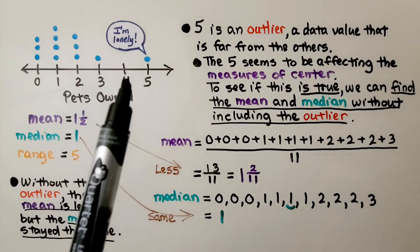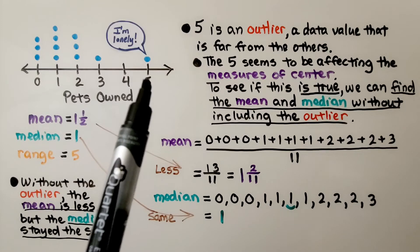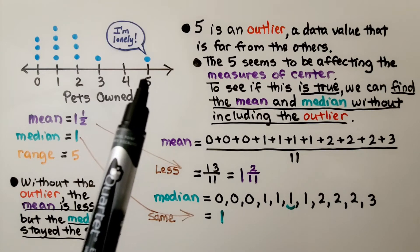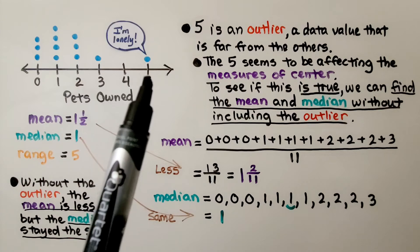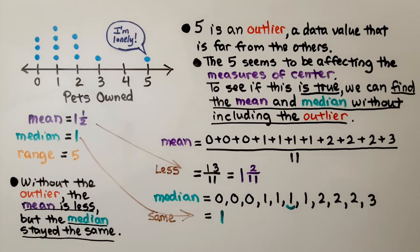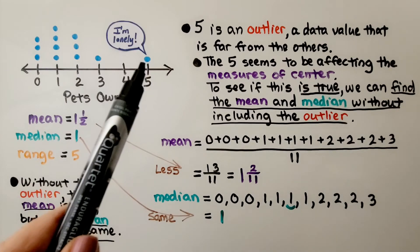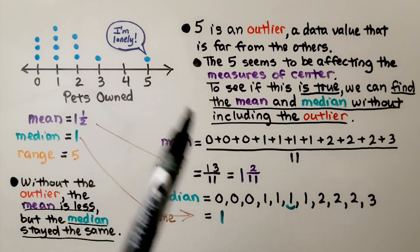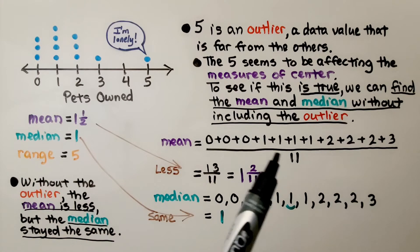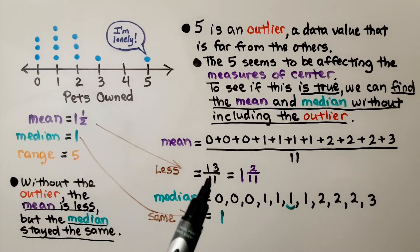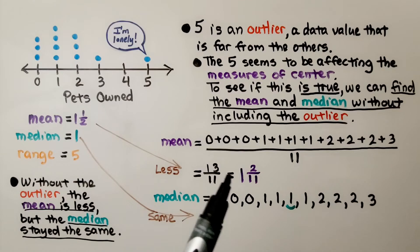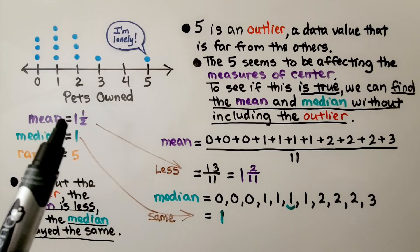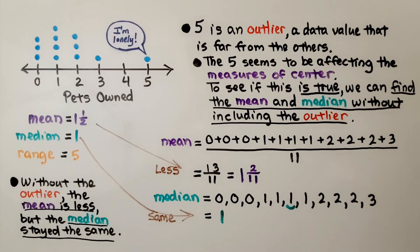Looking at our dot plot, we can see one student answered 5. 5 is an outlier, a data value that's far from the others, and the 5 seems to be affecting the measures of center. To see if this is true, we can find the mean without including the outlier. We take the outlier out, so we don't add 5 when we find the mean. Now we've only got 11 values in our data set. We add them up and get 13 divided by 11. That's 1 and 2 elevenths. That's less than the mean when we included the outlier.